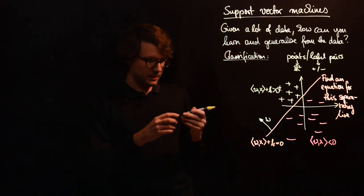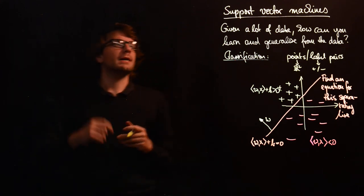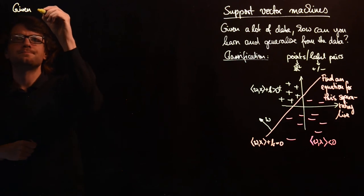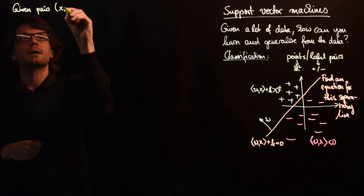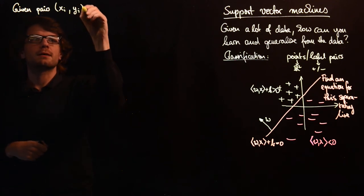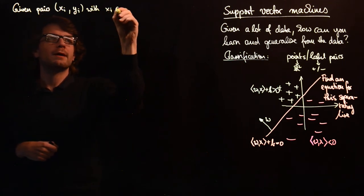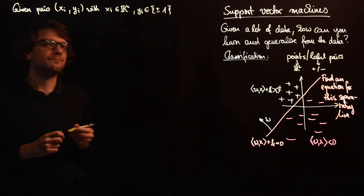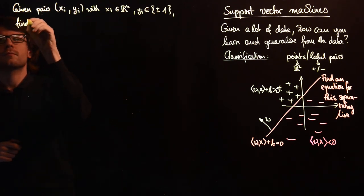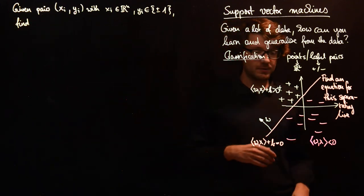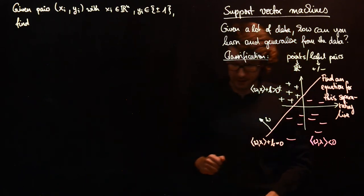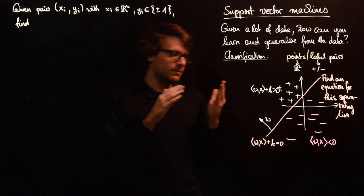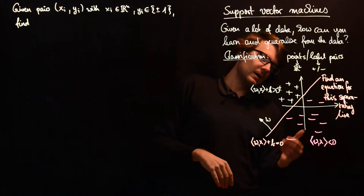Okay. So let's formulate our optimization problem from this setting. So given pairs and I name them xi and yi with xi in R^n and yi should be plus or minus 1. So the idea with support vector machines is not only to find an equation for some separating hyperplane in general for R^n, but instead you want to find the hyperplane which has the most margin to both sides.